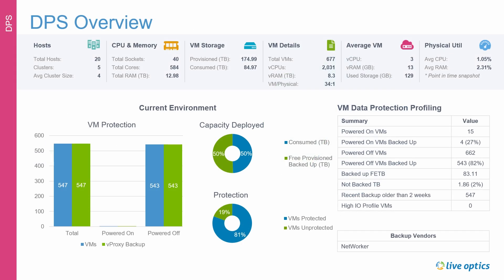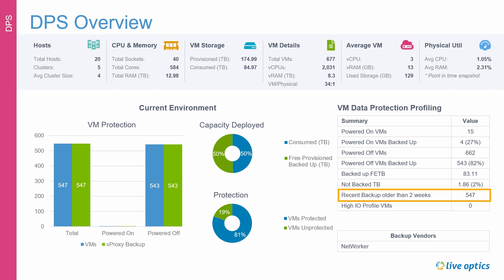When data protection software is identified within the virtual environment of an Optical Prime collection, the AIR Report will include a DPS slide as we see here. This DPS overview slide provides VM data profiling that includes valuable information on powered-on and powered-off VMs and how many are protected, the front-end capacity and how much data is not backed up, and how many VMs haven't been backed up in two weeks. It also provides information on the source hosts and their configuration, which can be used to determine licensing for certain backup software.